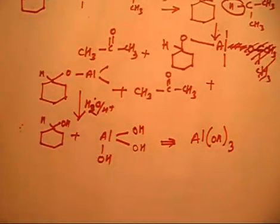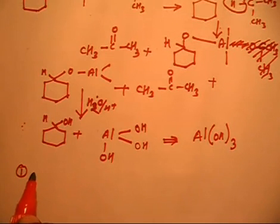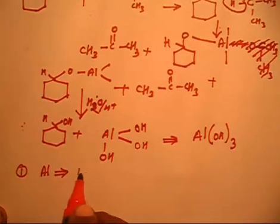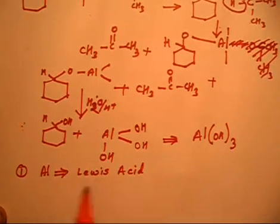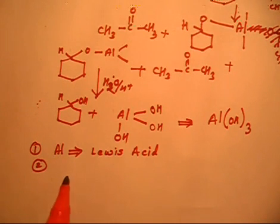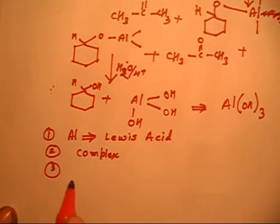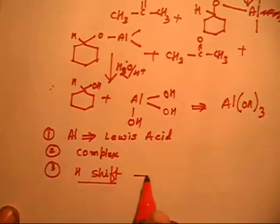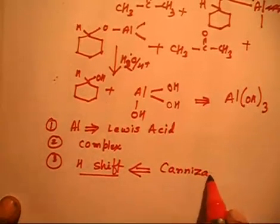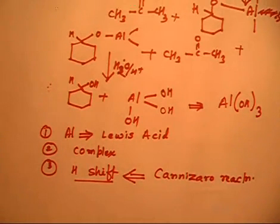Three important points about this reaction: First, aluminum acts as a Lewis acid and the carbonyl oxygen acts as a Lewis base or nucleophile. Second, a complex is formed between electrophilic aluminum and nucleophilic oxygen. Third — the most important point — there is a hydride shift, which is very similar to the Cannizzaro reaction.